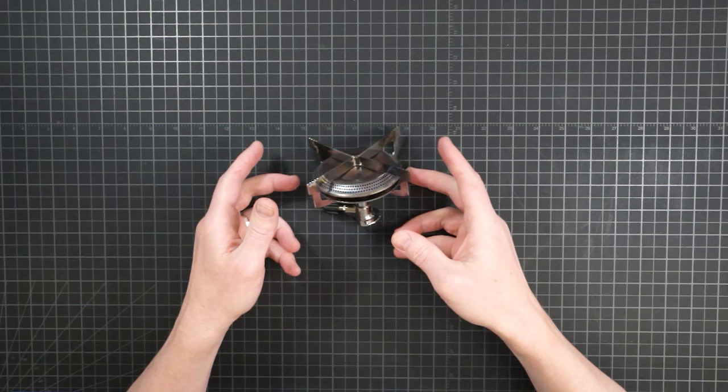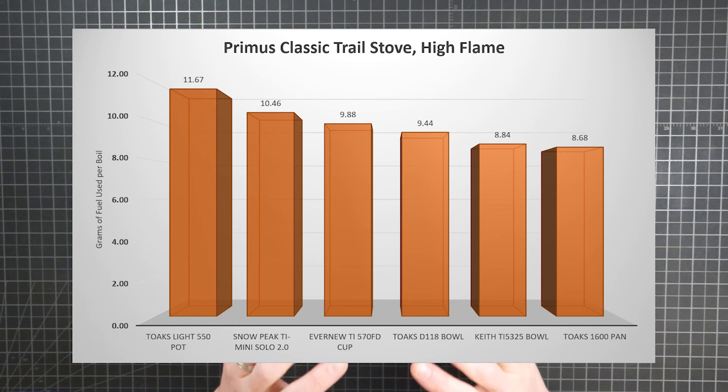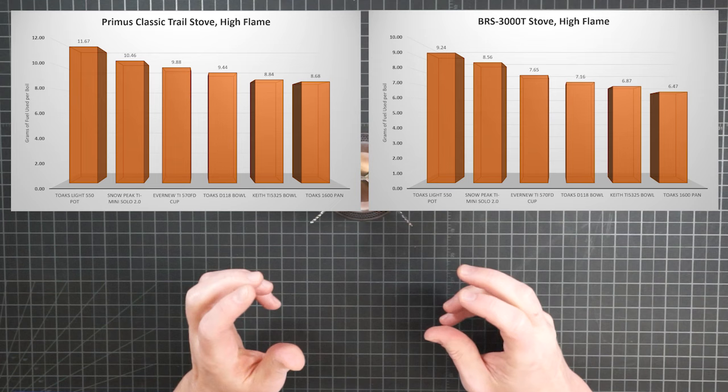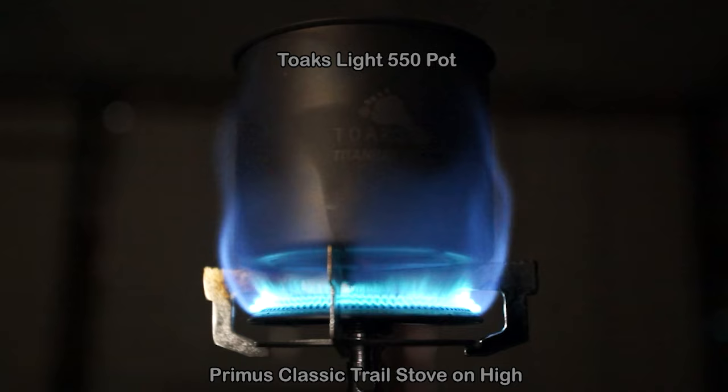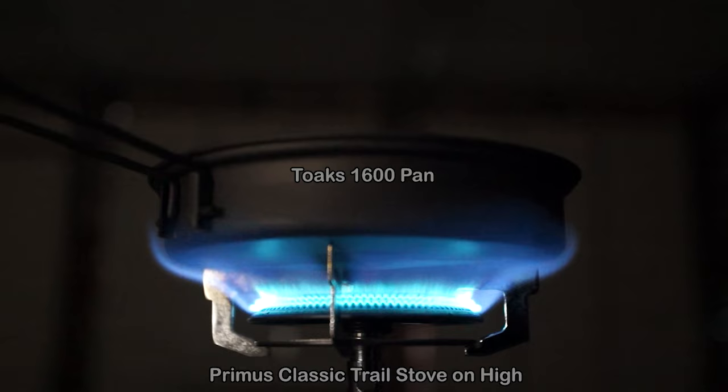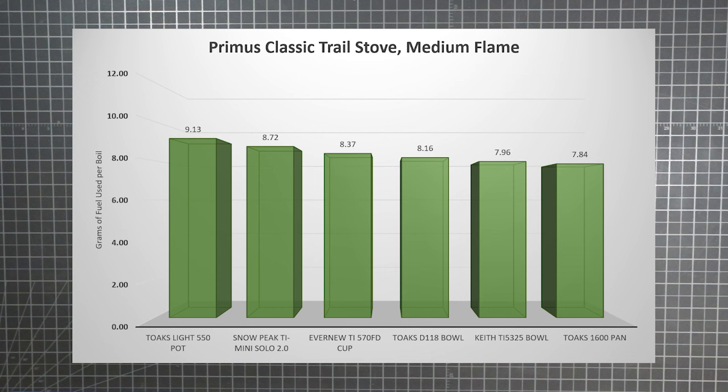To complete my protocol, I ran the 18 boils again with my large burner, the Primus classic trail stove. This was easily the least efficient stove regardless of the container used. It used more than two extra grams of fuel per boil compared to the BRS with all vessel types. And as you can see, it's pretty much what the kids would call a hot mess. The flame splash results in excessive overspill, even exceeding the edges of the widest pan. I think I used that, right? Hot mess. Yeah.